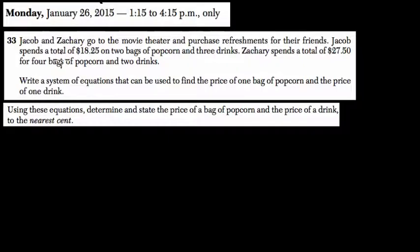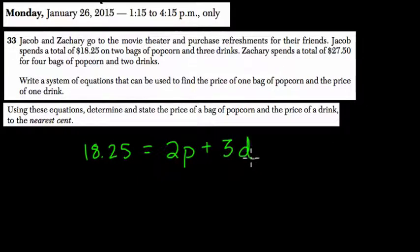So let's read it together. In this problem, Jacob and Zachary go to the movie theater and purchase refreshments for their friends. Jacob spends a total of $18.25. So let me write that in green because I'm dealing with money here. $18.25. And what he buys is two bags of popcorn, I'll say P is for popcorn, and three drinks. Three, and D represents drinks.